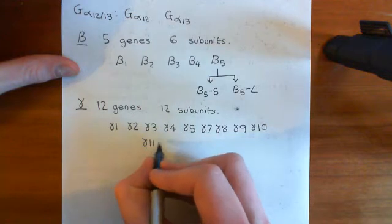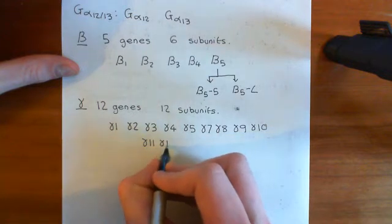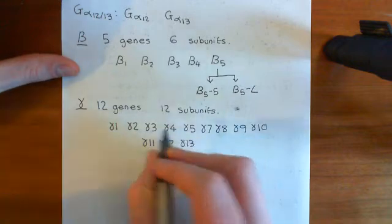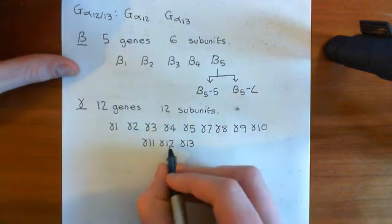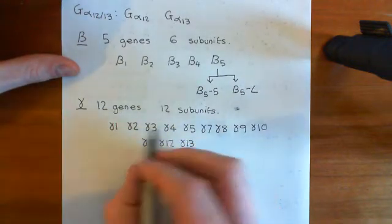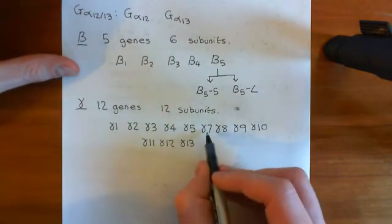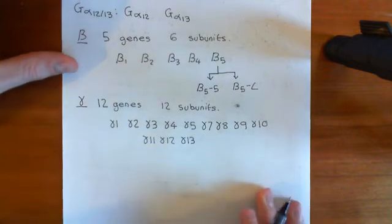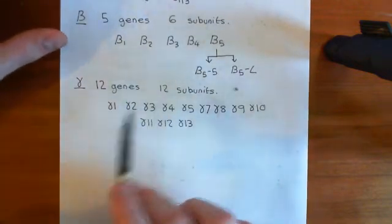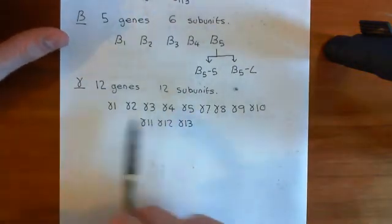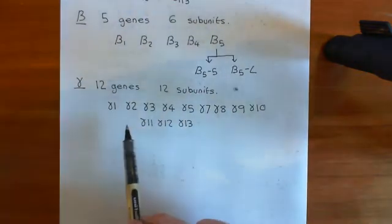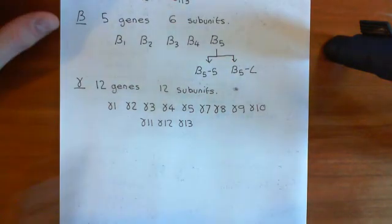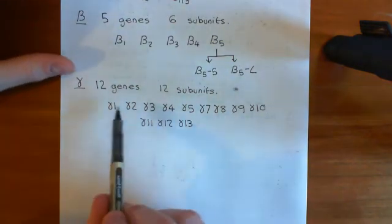So gamma 11, gamma 12, and then gamma 13. It's not gamma 1 to gamma 12. Instead, it's gamma 1 to gamma 5, then gamma 7 to gamma 13. That overall gives us 12 different gamma genes, which each code for a single protein — that gamma subunit.